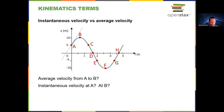So 14 meters minus 5 is 9 meters. Nine meters divided by 0.75 seconds is 12 meters per second. The object was going about 12 meters per second at that point, but then the slope of the line is decreasing. At point B, the tangent line is a horizontal line, and the slope of a horizontal line is 0, so the instantaneous velocity is 0 there.